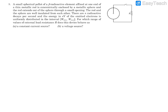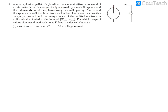Hello dear students, consider this question from modern physics. Let me explain what it says. There is a small spherical part of a radioactive beta element at the center, and concentrically there is a metallic sphere placed over here which is thin. This is connected with a rod, and there is a circuit resistance and a switch.